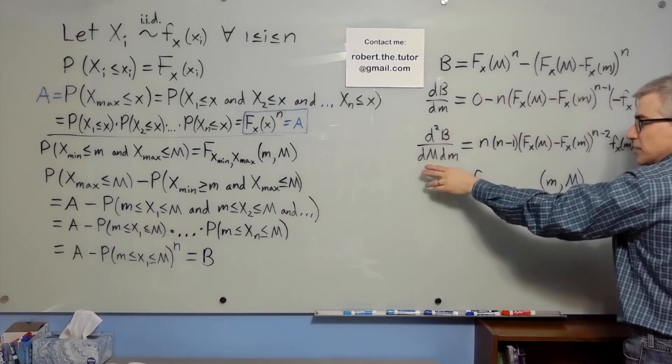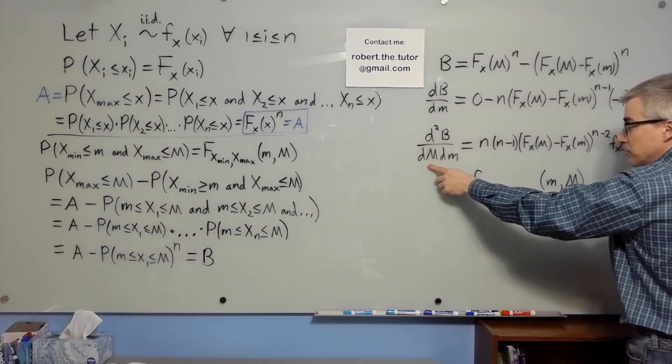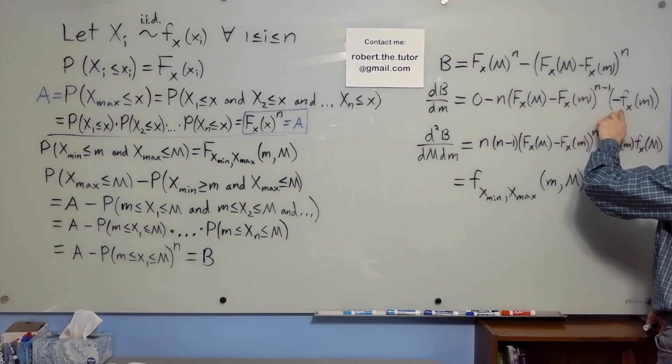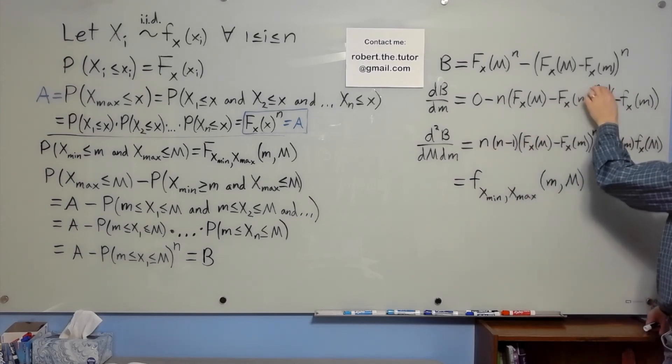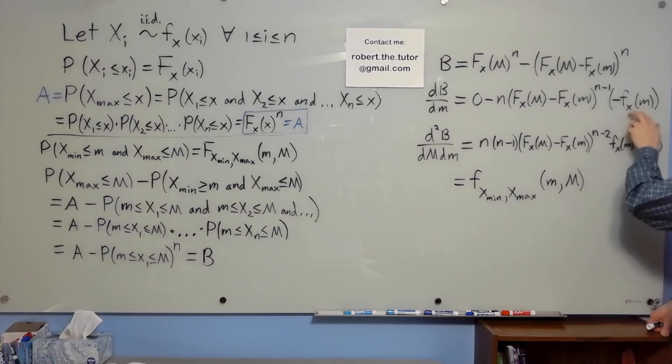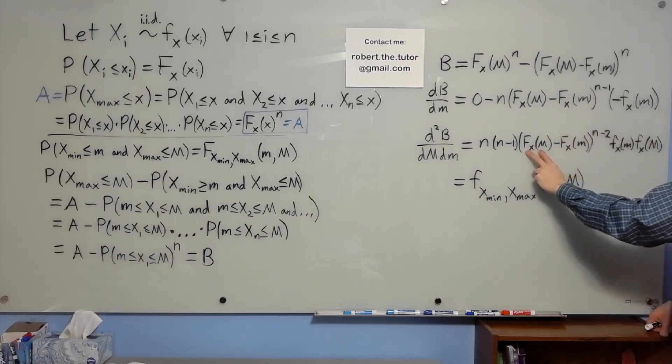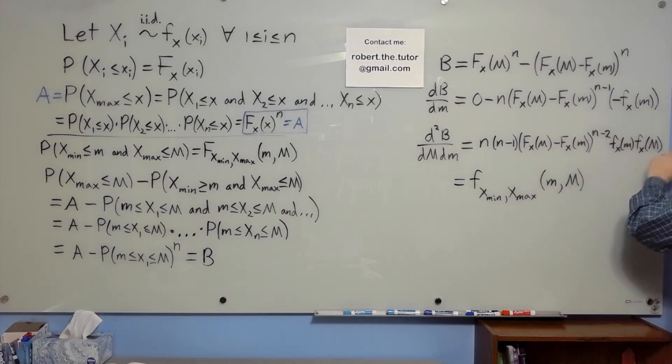Taking a second derivative, this time with respect to big M, the minus signs have cancelled. We have an n, we get an n minus 1, this expression to the n minus 2. We have the density fx of little m times the chain rule gives us the density little fx of big M. And that is the joint distribution.